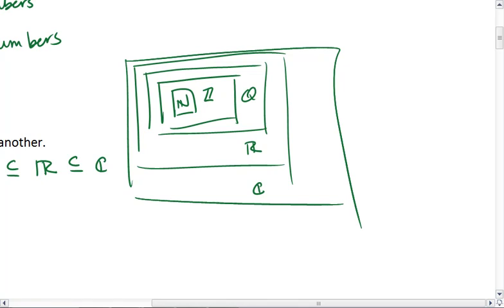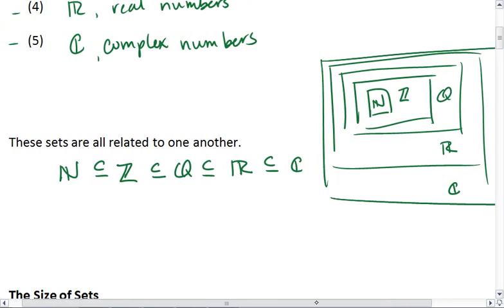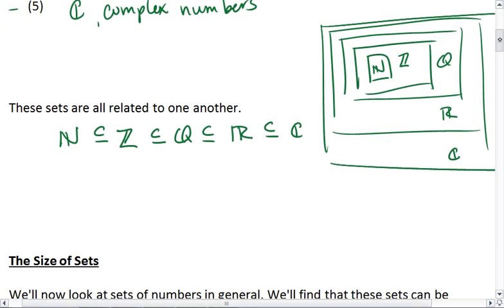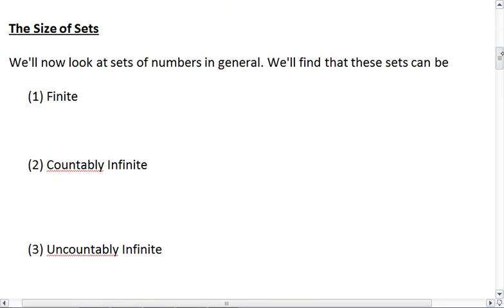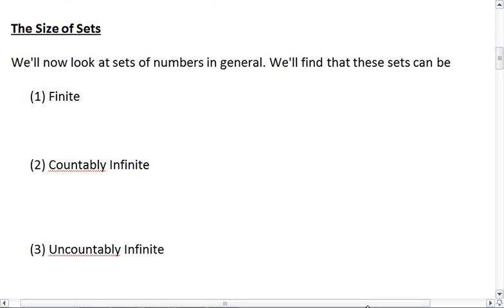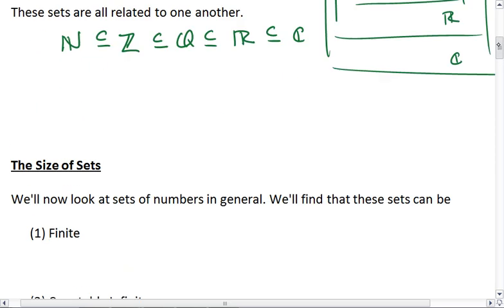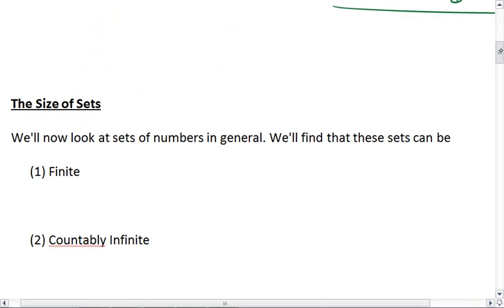If you have any questions on this, I'll go ahead and post some videos on section 1.1 to help you make the clear difference between these five sets of numbers and how they're related to one another. The first thing we're going to look at with regards to these sets is the size of sets. And this doesn't just apply to these five main sets, but any set of numbers.